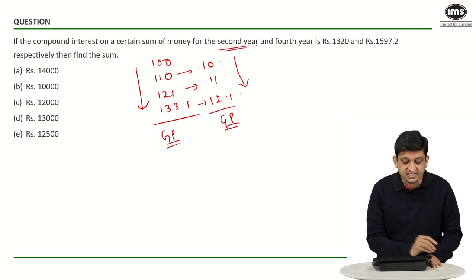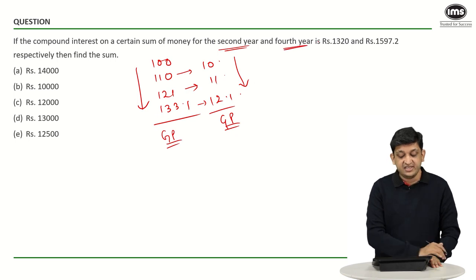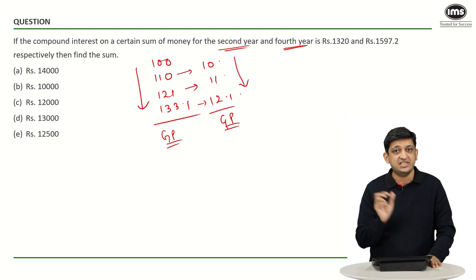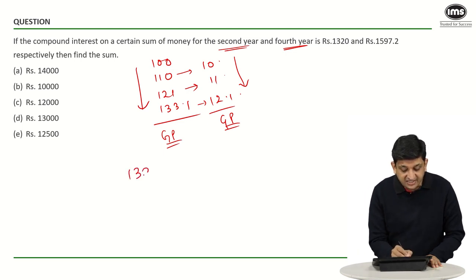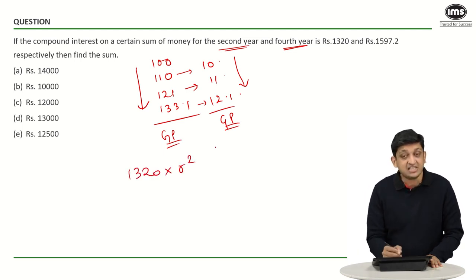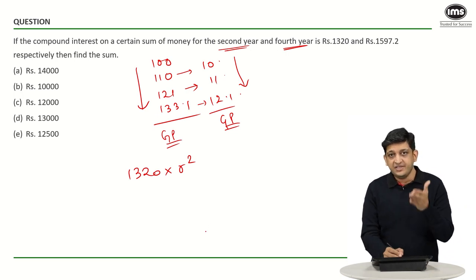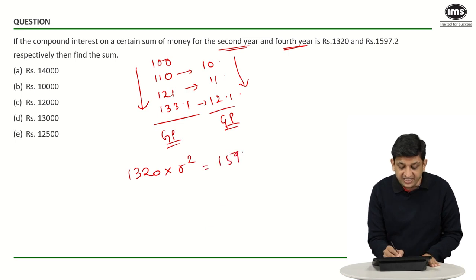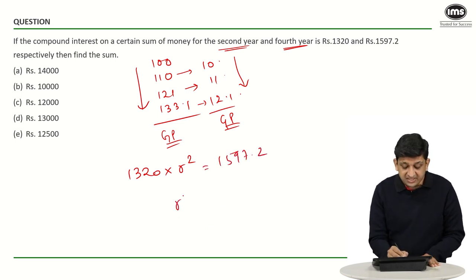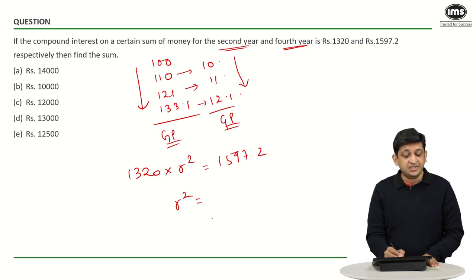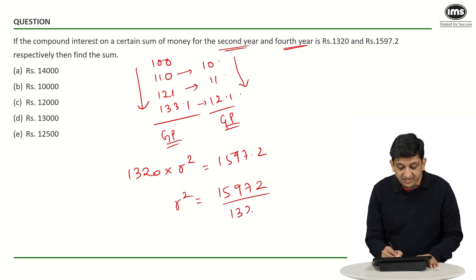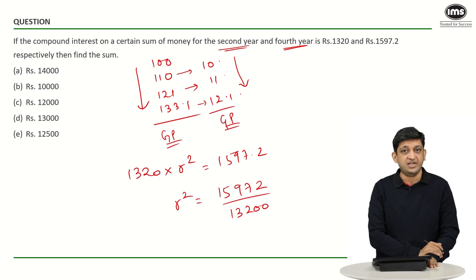In this case, the interest generated in the second year is 1320 and the interest generated in the fourth year is 1597.2. Since these are terms in a GP, multiplying 1320 by R² gives the fourth term 1597.2. So R² equals 1597.2 divided by 1320.